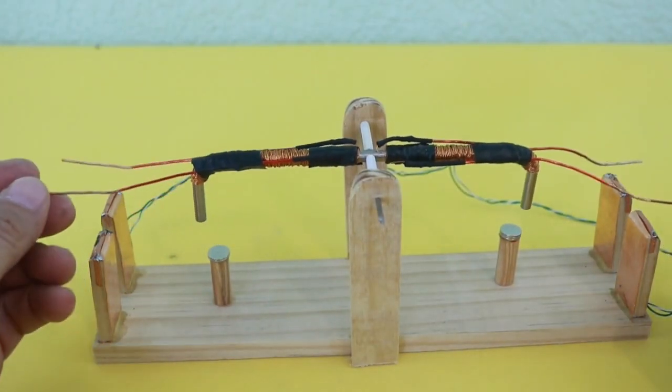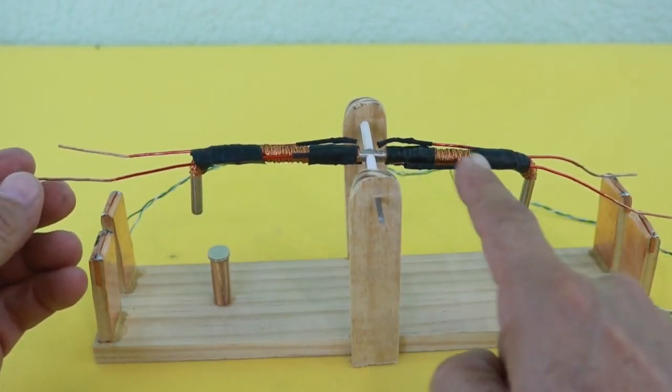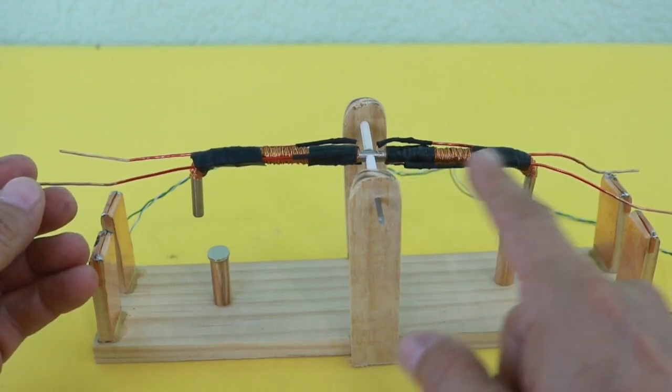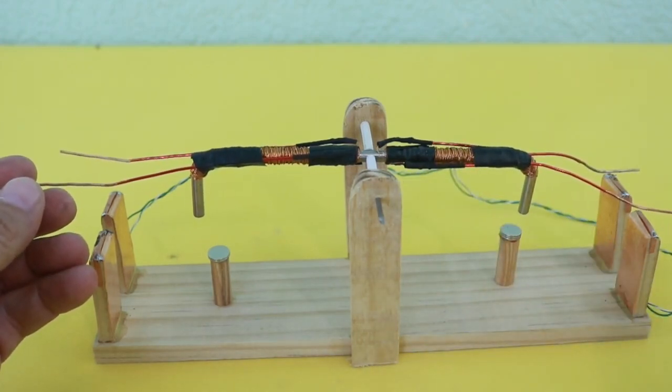Of course, when the current flows through the coil, the core, the iron core becomes an electromagnet.